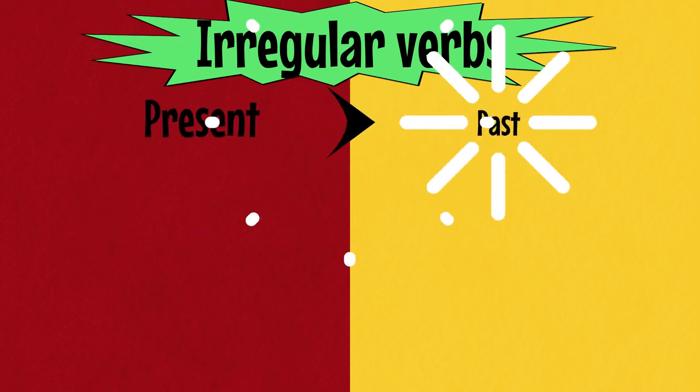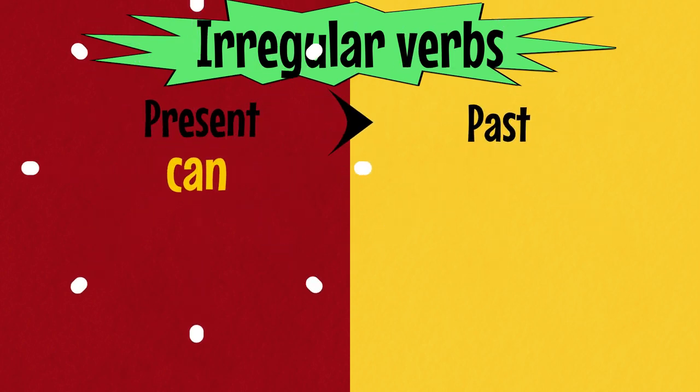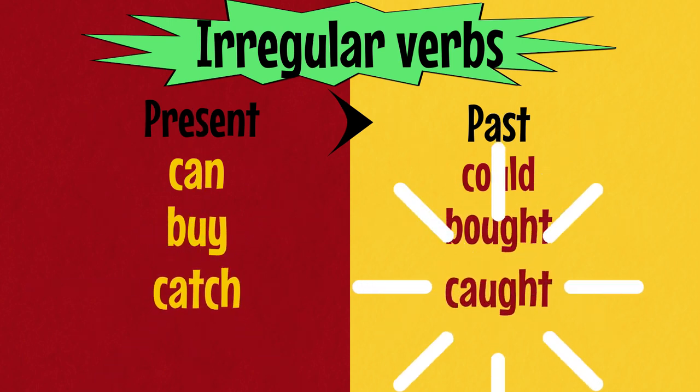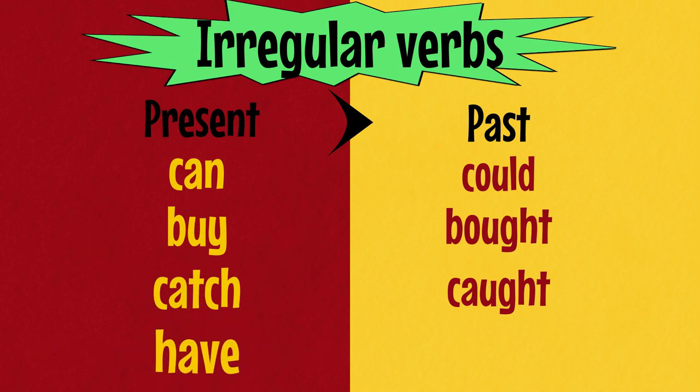Verbs. Irregular verbs. Present and past. Can, could. Buy, bought. Catch, caught. Have, had.